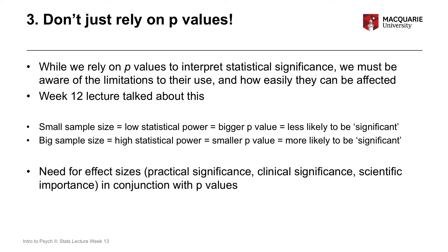It's very easy to have an overly simplistic view of significant or not significant — p bigger than 0.05, p smaller than 0.05. But the reality of statistical analysis is much more complicated and much more nuanced than that. So you really need to have a less black-and-white approach to interpreting your results.